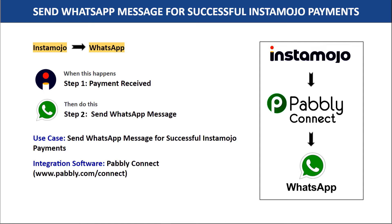I am going to do this process by integrating two software applications — Instamojo and WhatsApp. But there is an issue: both Instamojo and WhatsApp do not have any sort of direct integration between them. That is why we are going to use the automation software Pabbly Connect, which can transfer data from Instamojo to WhatsApp without any coding knowledge.